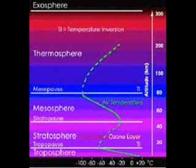Climate is the average weather over years. The weather can change every day, but the climate always remains the same. Weather changes occur during the day, 24 hours. Weather also changes with the seasons because of the Earth's tilt as it rotates around the Sun. Climate is the result of the Earth's atmosphere.